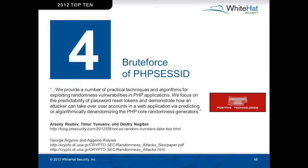To describe the attack in their words: 'We provide a number of practical techniques and algorithms for exploiting randomness vulnerabilities in PHP applications. We focus on the predictability of password reset tokens and demonstrate how an attacker can take over accounts in web applications via predicting or algorithmically derandomizing the PHP core randomness generators.' Let's see what we can do on the next slide.